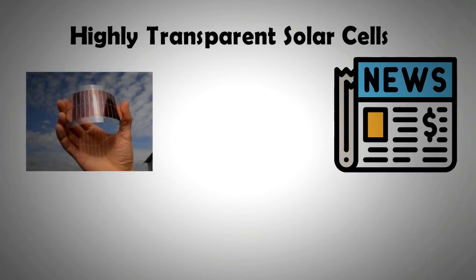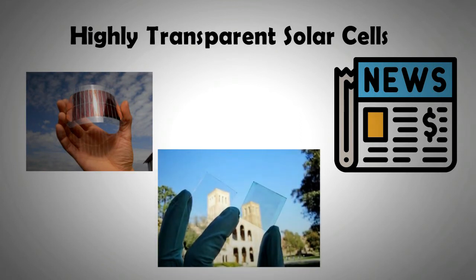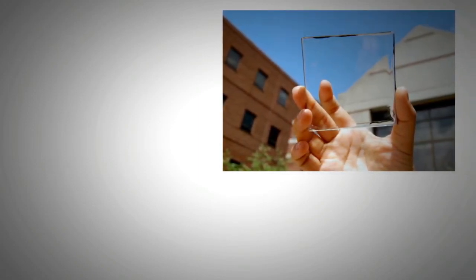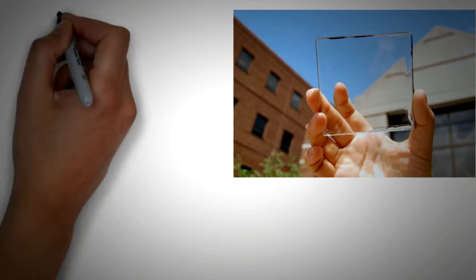In contrast, the panel developed by the Michigan State University or MSU were highly transparent. In fact, they were so clear that potentially they can be used in mobile phones, buildings, windows, and even cars.